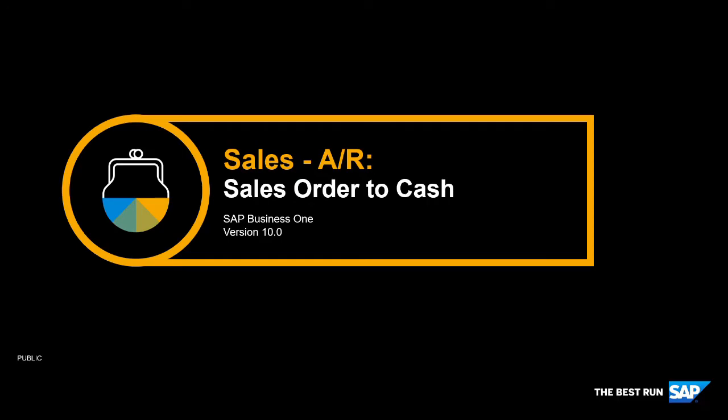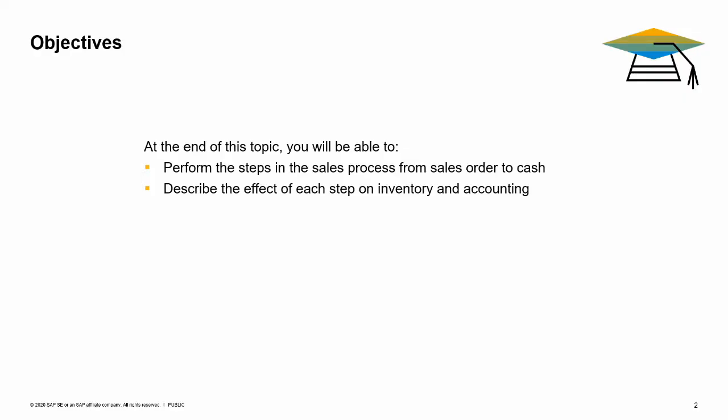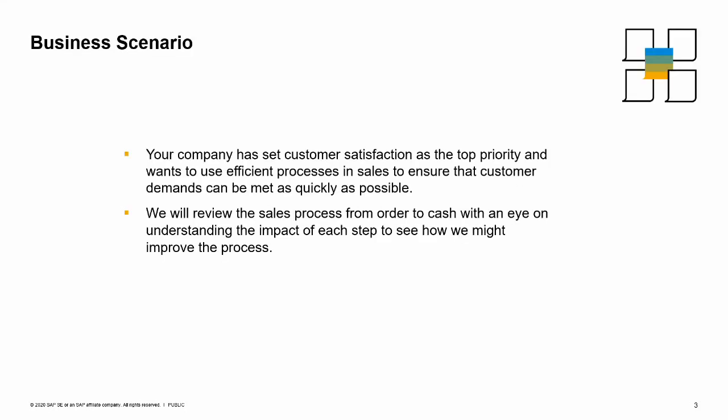Welcome to the topic on sales order to cash. In this topic, we perform the steps in the sales process from sales order to cash. As we create each document, we describe the effect of each step on inventory and accounting. Your company has set customer satisfaction as the top priority and wants to use efficient processes in sales to ensure that customer demands can be met as quickly as possible. We will review the sales process from order to cash with an eye on understanding the impact of each step to see how we might improve the process.